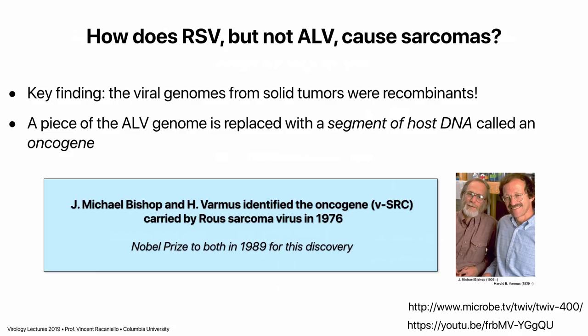Rous sarcoma virus, but not ALV, causes sarcomas. Starting with the work of Temin, others began to study this in the 1960s and 1970s. The key finding was that the viral genomes from solid tumors were recombinants — a piece of the ALV genome where a piece was replaced with a segment of host DNA. For Rous, the segment is in addition to the genome. For most other sarcoma viruses, the cell gene replaces a viral gene, making them defective. The gene that comes in from the host is called an oncogene because it leads to cancers.